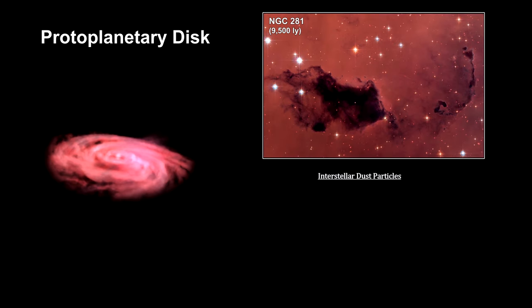The dust in the interstellar medium extinguishes light from stars via absorption and scattering. The scattering leads to emissions of their own.